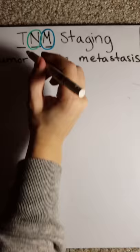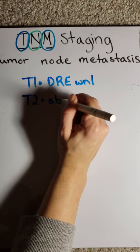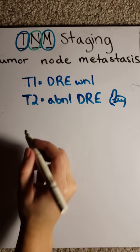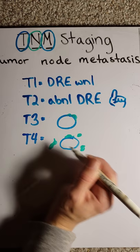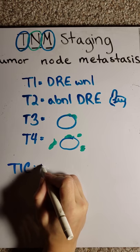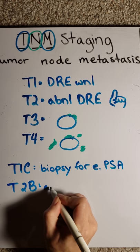The T for tumor in TNM has many subparts. T1 indicates the tumor cannot be felt on DRE. T2 indicates the tumor can be felt on DRE. T3 indicates the tumor has grown beyond the prostate capsule. T4 indicates the tumor has infiltrated surrounding tissues. The most common tumor stage is T1c, meaning the tumor was found during biopsy for an elevated PSA.